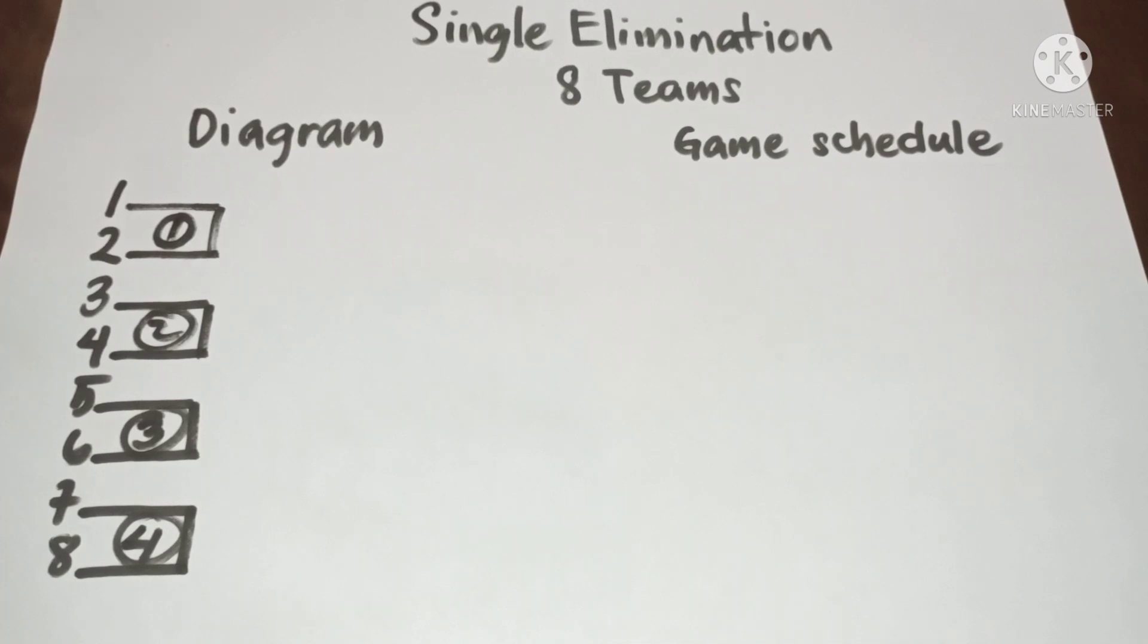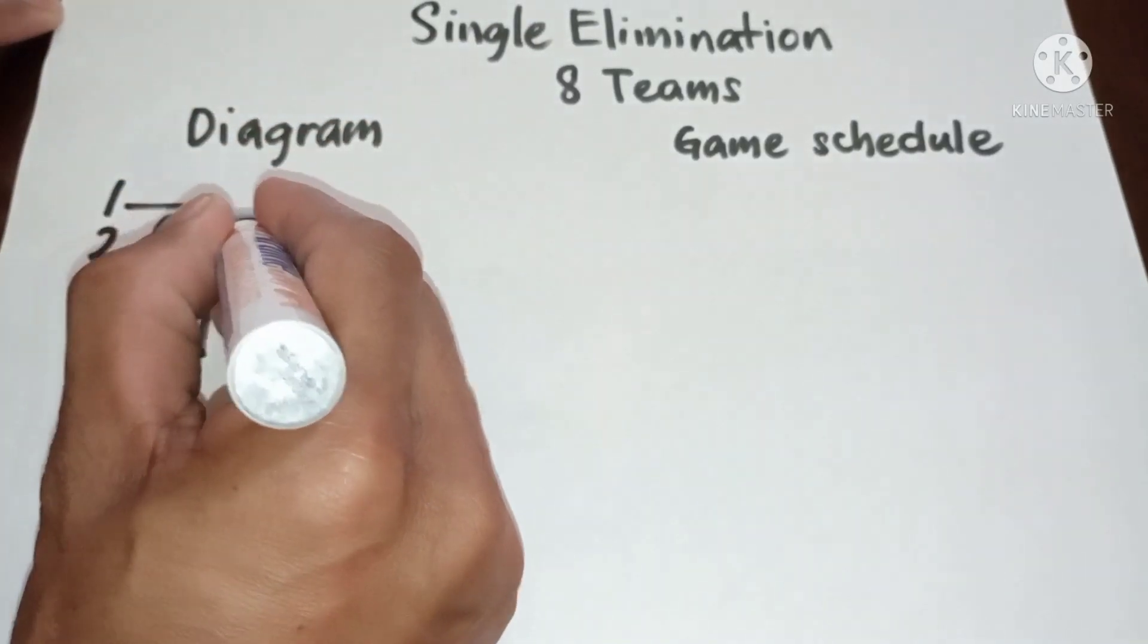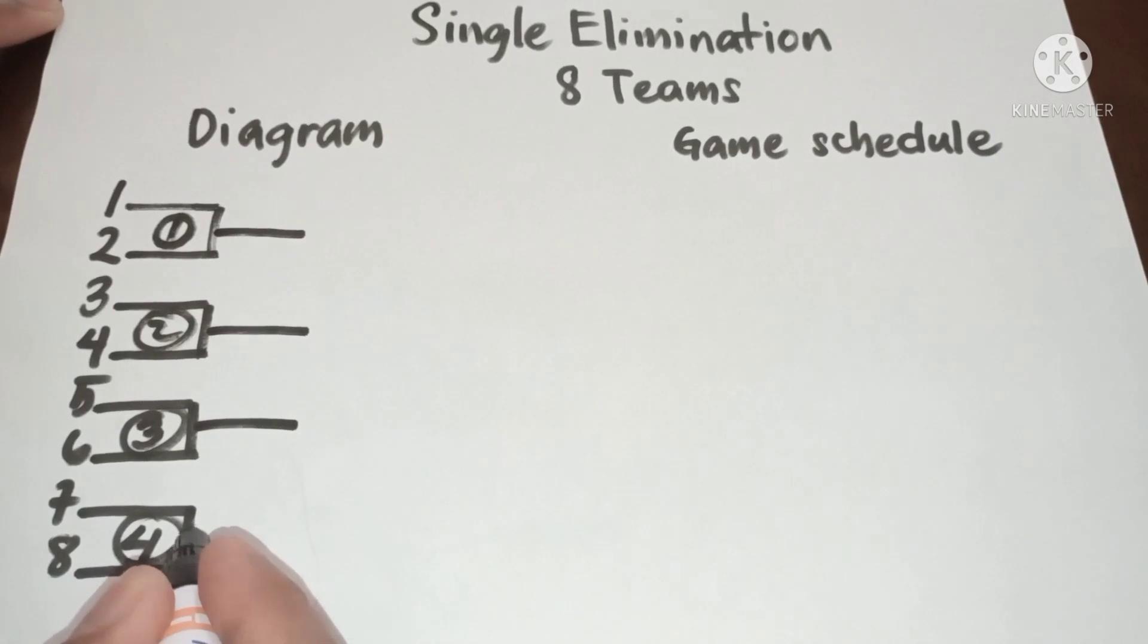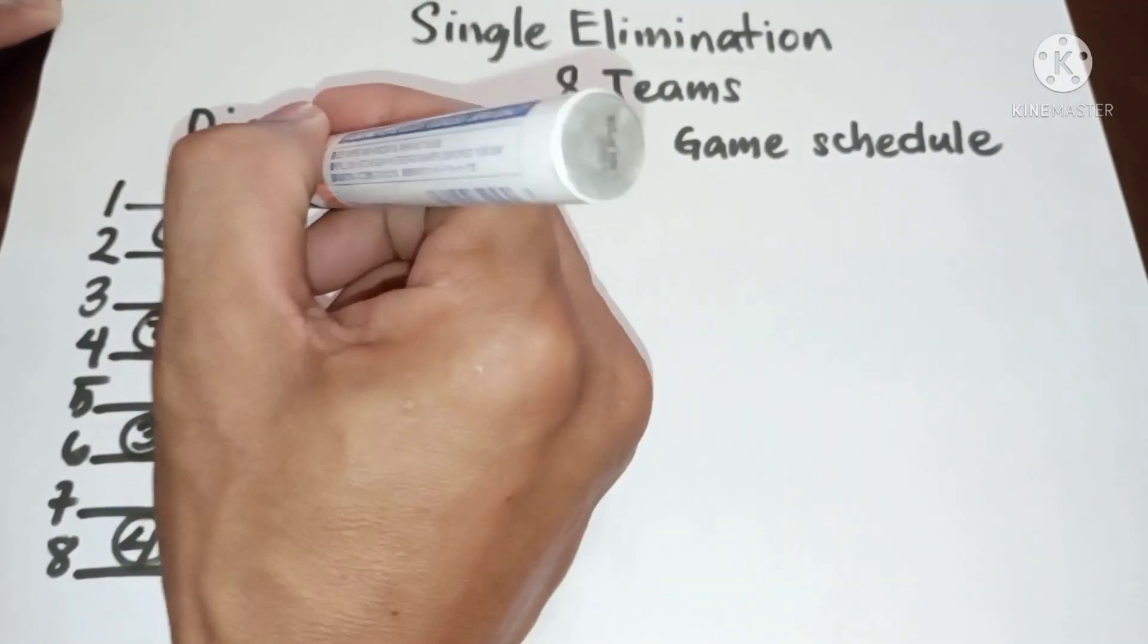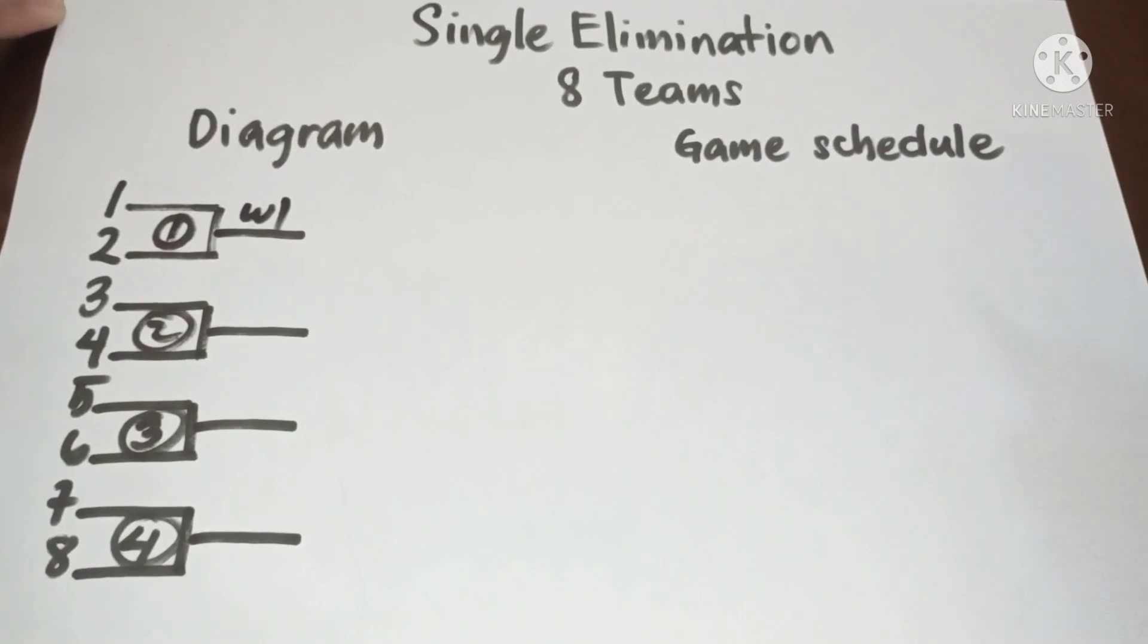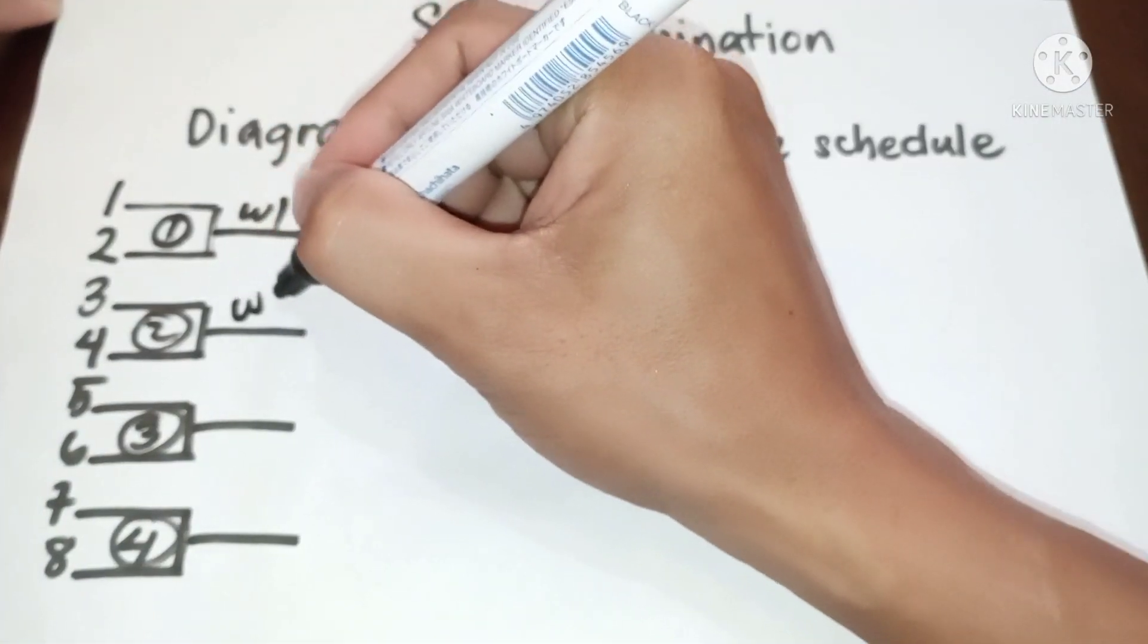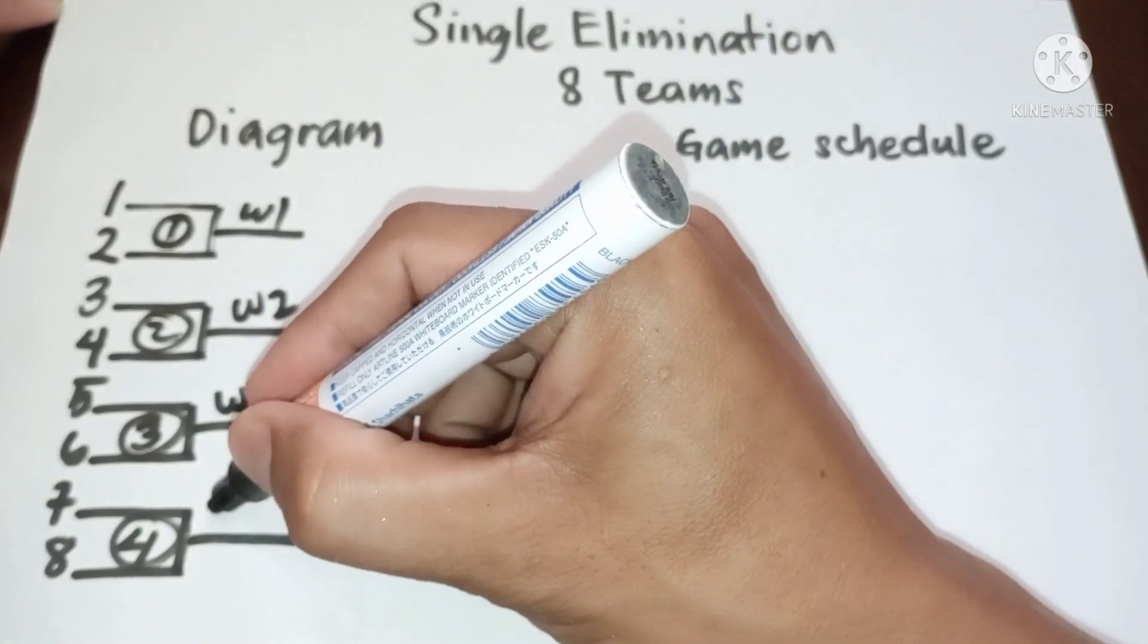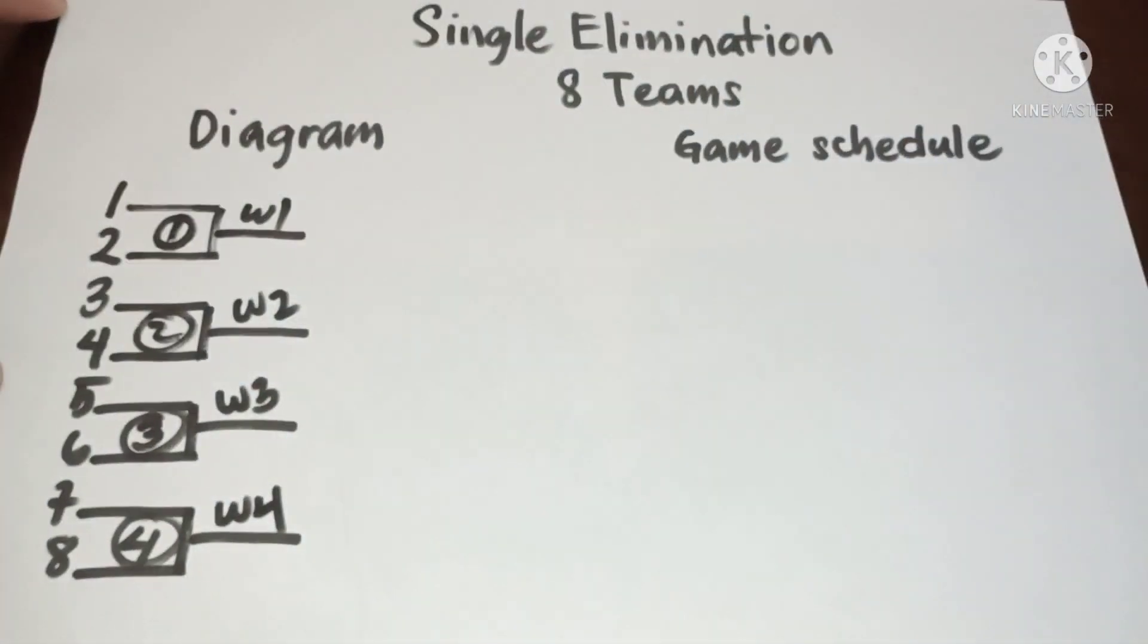Now let us have the result in first round: winner one, winner two, winner three, winner four.